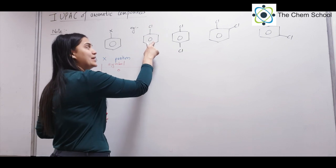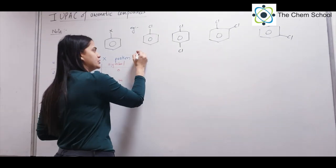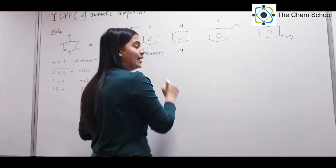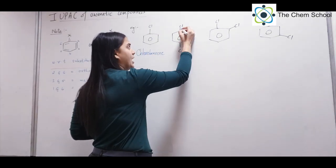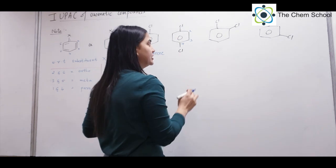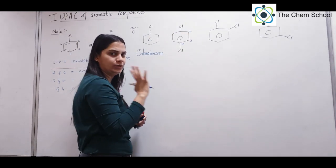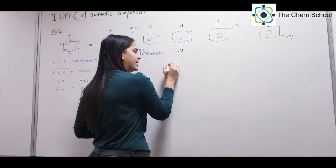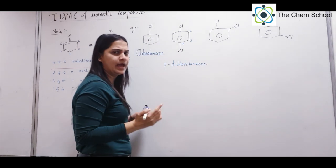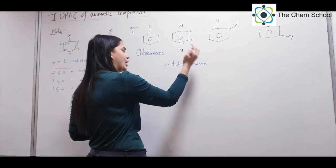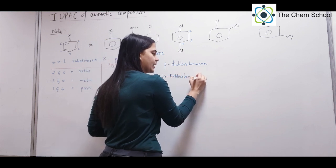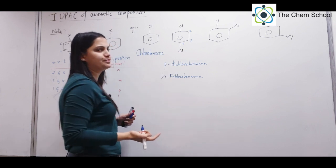Let's look at some examples to understand more clearly. First, if benzene has only one chloro attached, it is simply chlorobenzene. Now look at this structure — if this is position 1, going around: 2, 3, 4. So positions 1 and 4 are para to each other. There are 2 chloro groups, so it is dichloro. Therefore this is para-dichloro benzene. In IUPAC numbering you write it as 1,4-dichloro benzene.